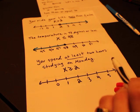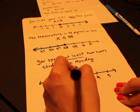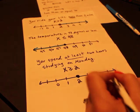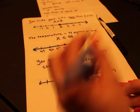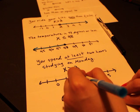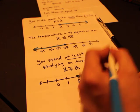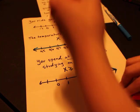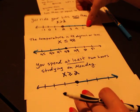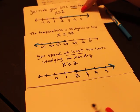So x is greater than or equal to two. It's an or equal to, so closed circle. And greater than, we shade to the right.